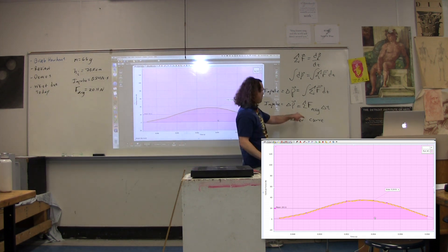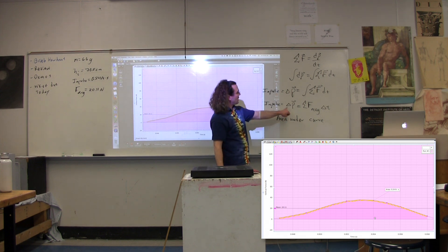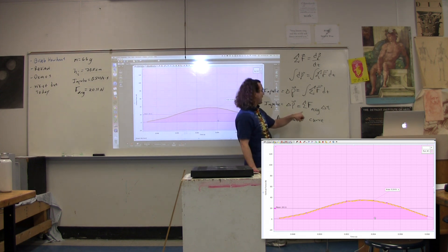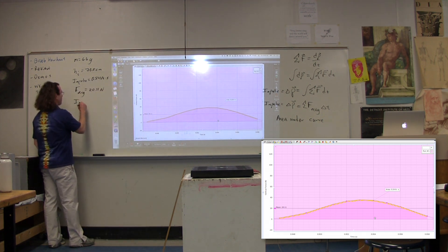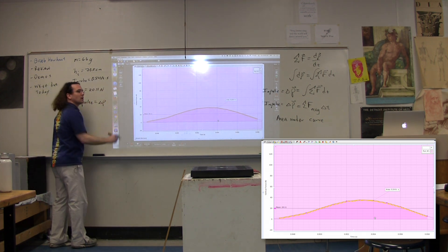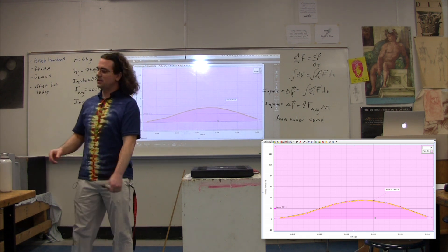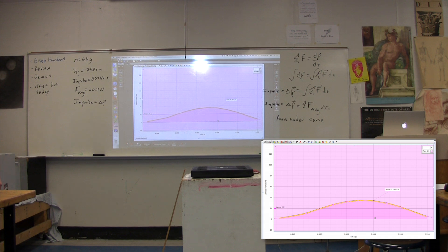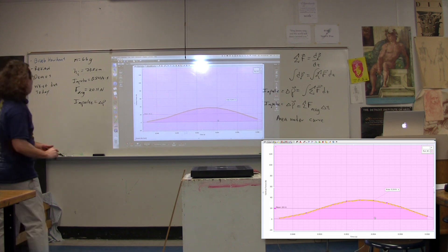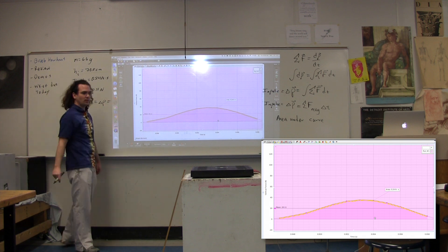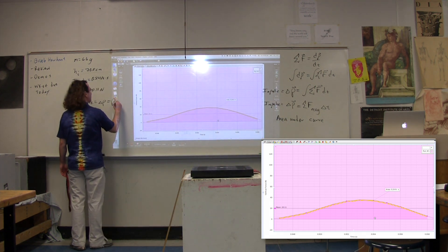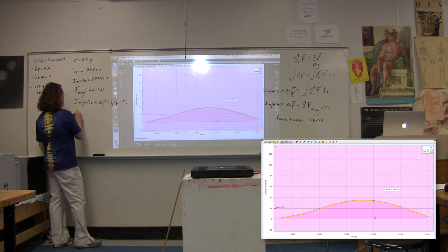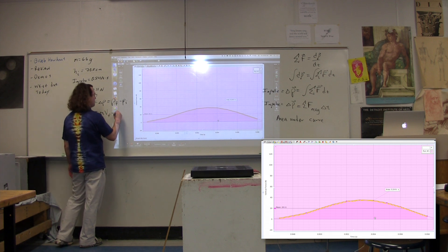So, we can go through and figure out a bunch of stuff. The first thing we can see is we have the impulse. Let's go through. Impulse is equal to the change in momentum, right? David, what is change in momentum? The change in momentum means the momentum final minus the momentum initial. We know momentum is mass times velocity. So, this is mass times velocity final minus mass times velocity initial.